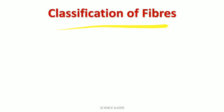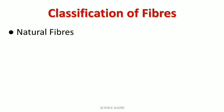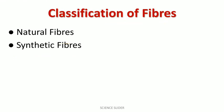Now we will classify the fibers. This is the classification of fibers. We classify fibers into two parts: the first one is natural fibers and the second one is synthetic fibers. We will discuss what natural fibers and synthetic fibers are.